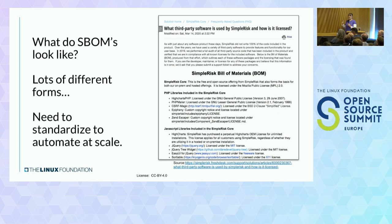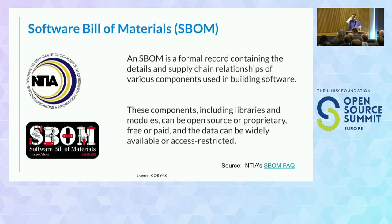NTIA had been running multi-stakeholder working groups for about two to three years, meeting every week, debating these terms and concepts. There was a group that did the framing and tried to figure out what minimum viable was, because that's what they wanted to implement first. What they pretty much came down to was a record containing the relationships and the components. Components were defined very deliberately ambiguously — it could be software, source code, files, libraries, modules, open source, proprietary, whatever.